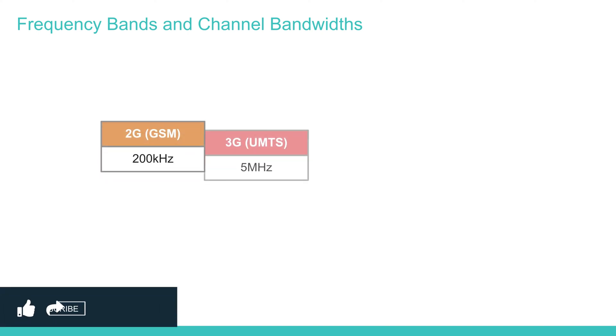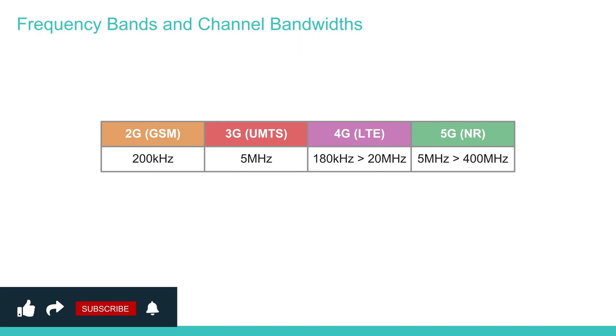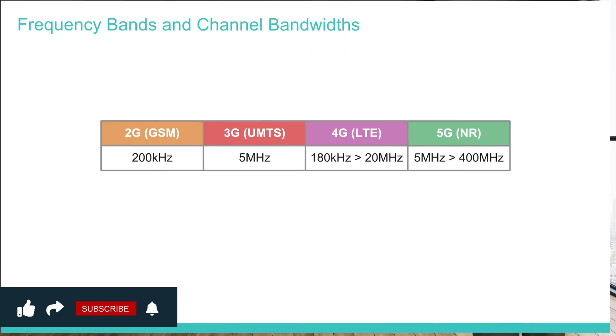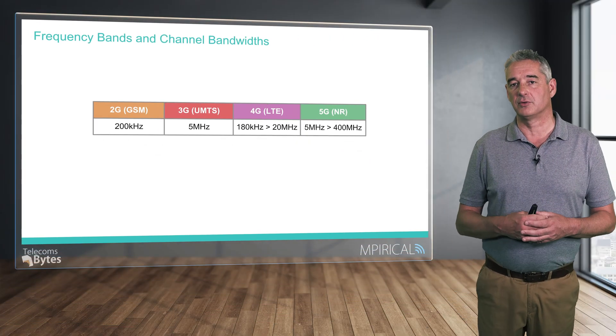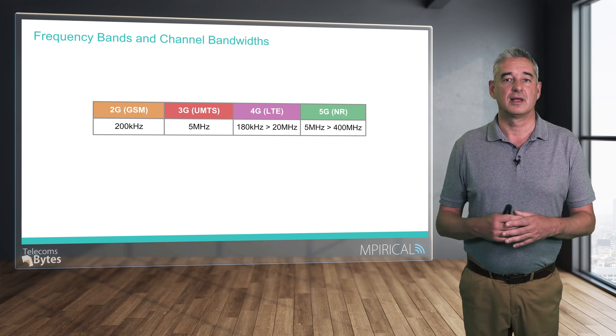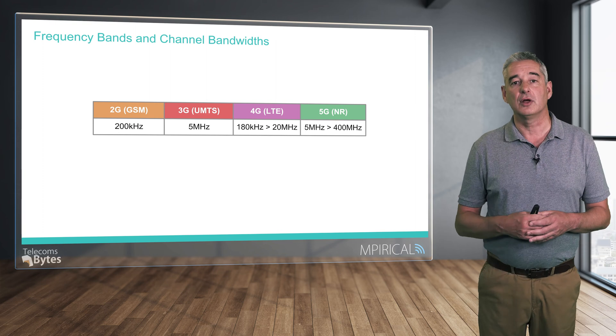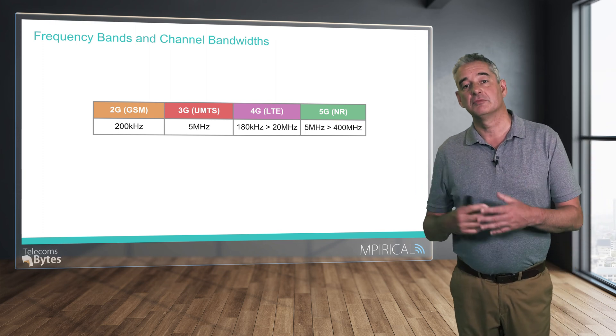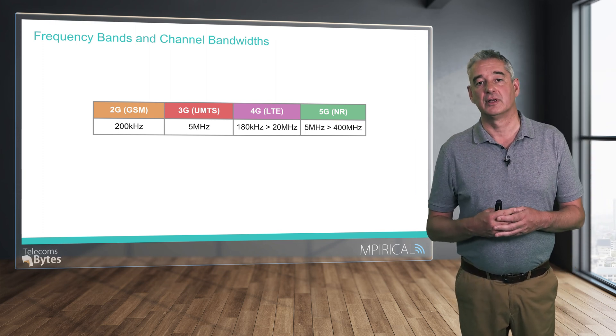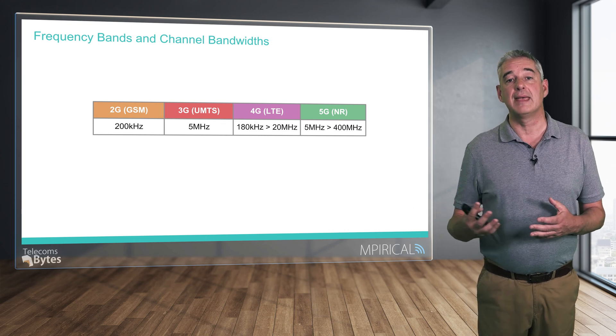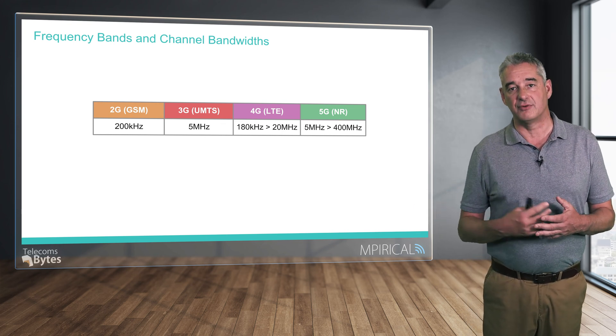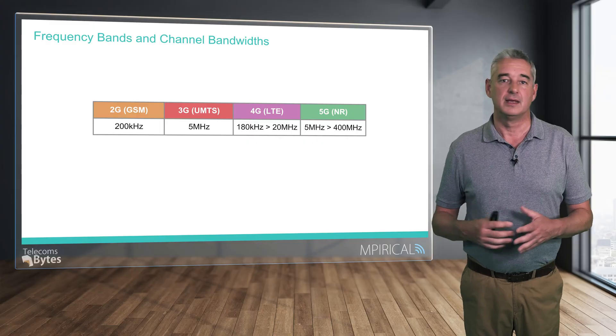Returning to the mobile technologies, these are now able to operate in numerous frequency bands and support various channel bandwidths. However, as can be seen in the diagram, each iteration of the technology has seen the maximum channel bandwidth increase, which is a major reason why they have been able to support ever higher data rates—a requirement if the networks are going to support services such as ultra high definition video.